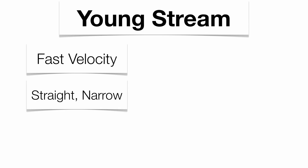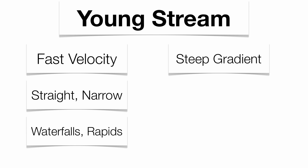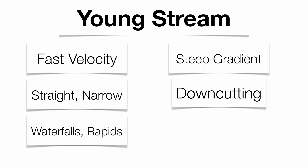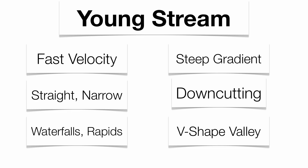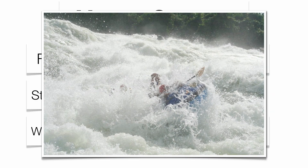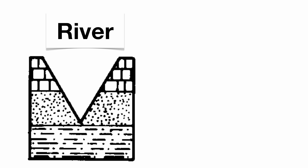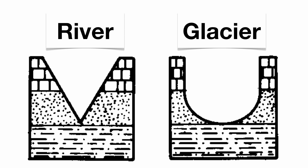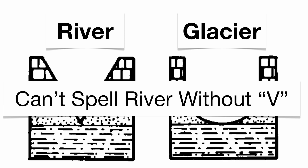Young streams are very energetic — they have very fast velocity, are relatively straight and very narrow, with not a lot of turns. They tend to have a lot of waterfalls and rapids, and a very steep gradient. Because water travels so rapidly, erosion occurs on the bottom of the stream channel, which is called down cutting and produces a V-shaped valley. That's the Colorado River shown there, and your classic V-shaped valley. If you get mixed up, remember: you can't spell the word river without the letter V — V-shaped valley, there's a V in river.